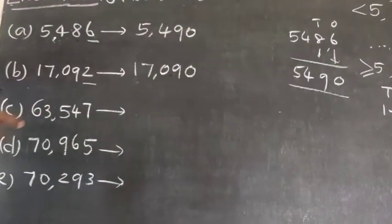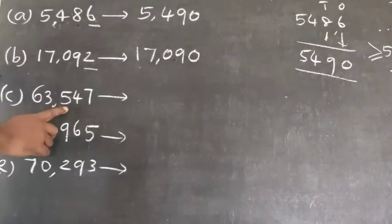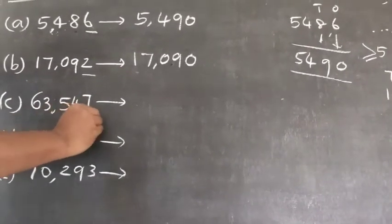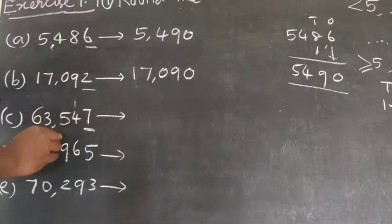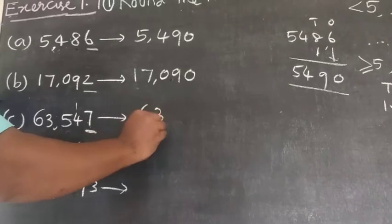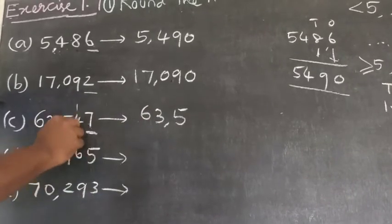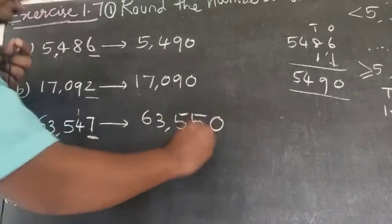Question C: 63,547. The last digit is seven, so the last digit becomes zero and we add one to the tens place. 4 plus 1 equals 5. The answer is 63,550.